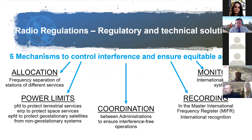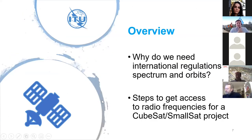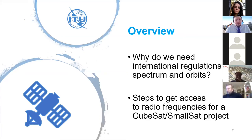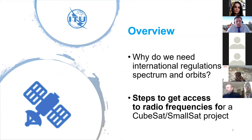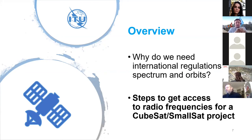These are the five main mechanisms. A good quarter of the 2000-page regulation is about space systems. I will now move to the second part: the practical steps to get access to radio frequencies for CubeSat and SmallSat projects. I am assuming you are interested in building and launching a small satellite — not a constellation, and perhaps mainly for educational purposes such as university or EPFL activities.